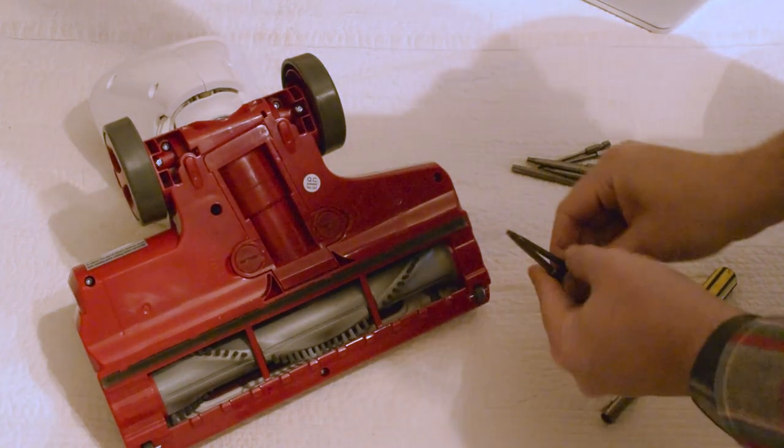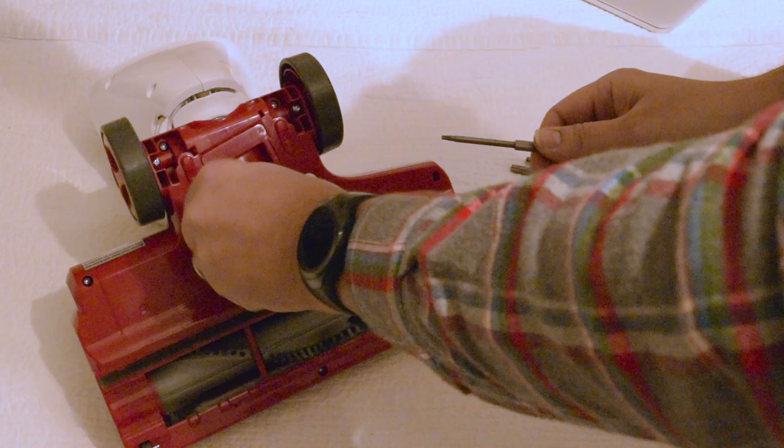A lot of the newer model Sharks are using these security bits to open them up. These are kind of weird bits that are star-shaped with a hole in them. You can't just buy them anywhere.